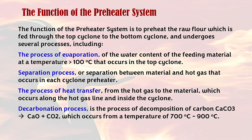The function of the preheater system is to preheat the raw flour which is fed from the top cyclone to the bottom cyclone, and undergoes several processes: the evaporation of water content from the feeding material at a temperature greater than 100 degrees Celsius in the top cyclone; the separation between material and hot gas that occurs in each cyclone preheater; the process of heat transfer from the hot gas to the material along the hot gas line and inside the cyclone; and the decarbonation process, which is the decomposition of CaCO3 to CaO plus CO2, occurring from a temperature of 700 to 900 degrees Celsius.